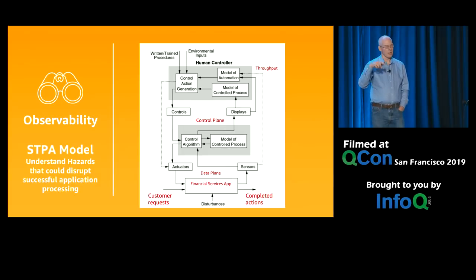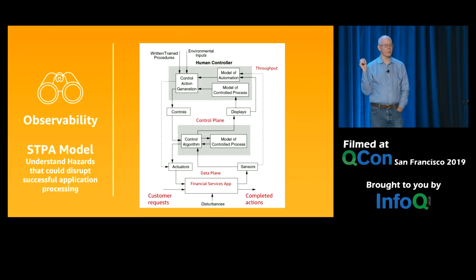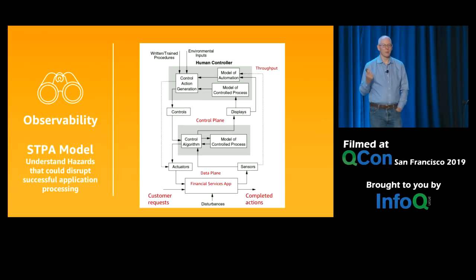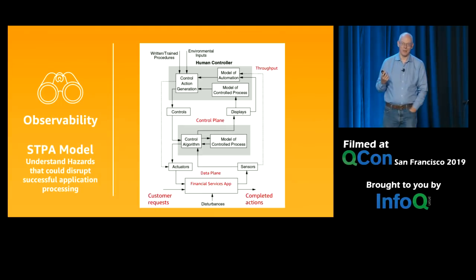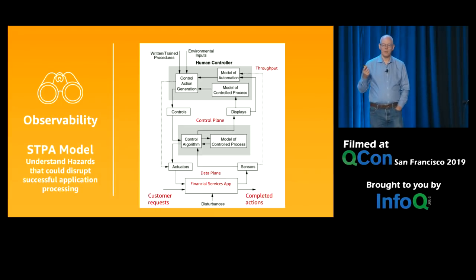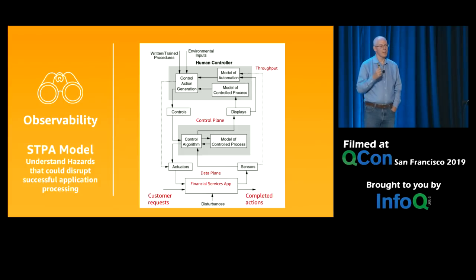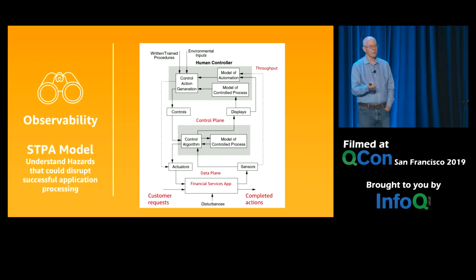You don't know. So your model of automation is your model of how the control plane is working, and the model of the control process is your understanding of how the actual thing works. If you put someone who's never seen the system before in charge and they get the alert — they don't have the model. What should they do? Phone a friend. Training and written procedures are about trying to get people to understand the model of behavior of the control system and the model of the thing being controlled. A lot of problems come from the usability of that interface.